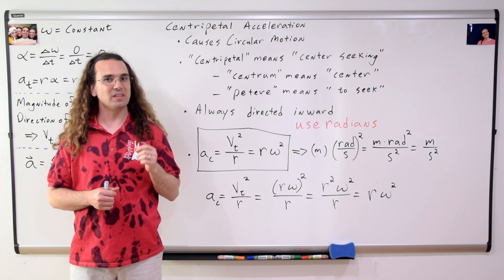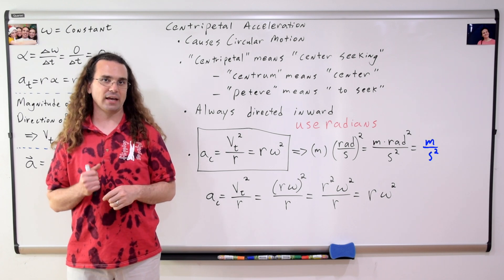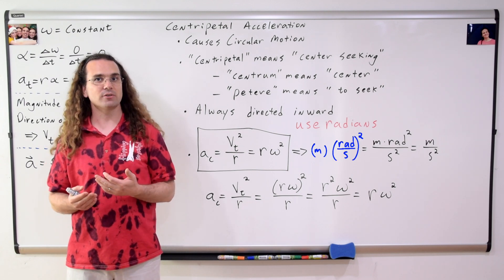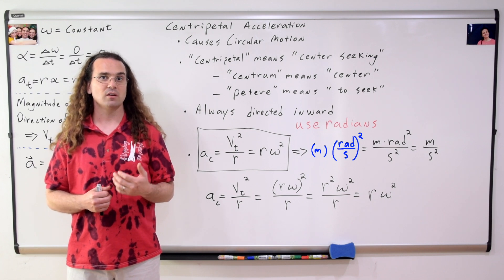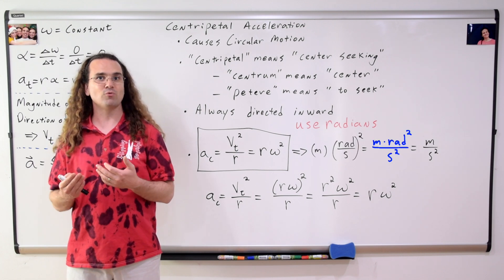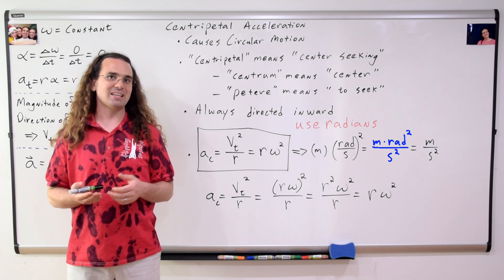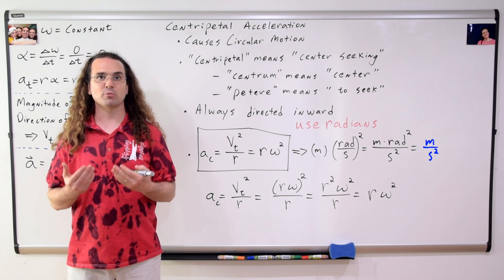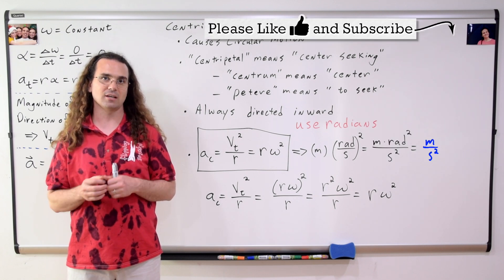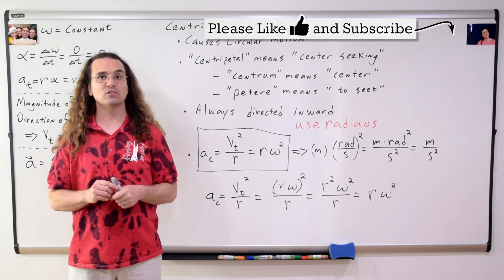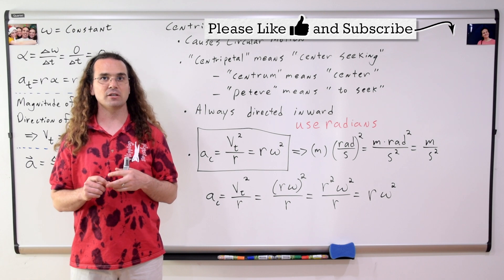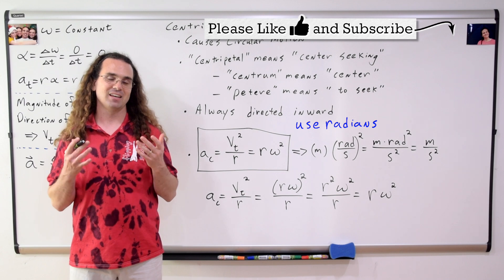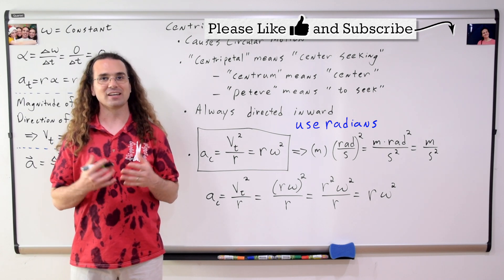The base SI units for the linear centripetal acceleration are meters per second squared. The radius is in meters and the angular velocity is in radians per second, giving meter-radians squared divided by second squared. However, radians have no units and are a placeholder, so we simply remove them and get meters per second squared. Just like the equations for arc length, tangential velocity, and tangential acceleration, you need to use radians in the centripetal acceleration equation. Thank you very much for learning with me today. I enjoyed learning with you.